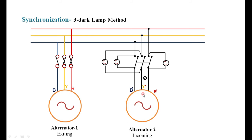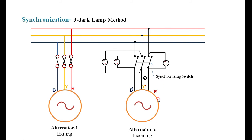The fourth condition is that the phase of the incoming machine must be the same as the bus bar phase. If the phase of the bus bar and the generated voltage are equal and opposite, the voltage across the bulb is zero and the bulb will not glow. Therefore, when you observe the lamp going completely dark, you must close the switch — this switch is called the synchronizing switch.